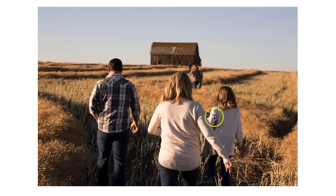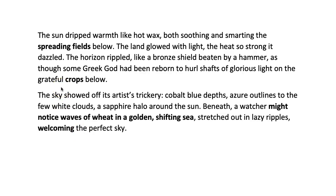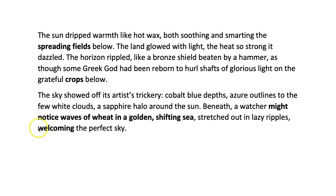So here we go. We've got a family walking through wheat fields towards a barn — not very inspiring — but our two paragraphs still work. The sun dripped warmth, smarting the spreading fields below. And then the glorious light is going to fall on the grateful crops below. Now we come to the second paragraph. Beneath, a watcher might notice waves of wheat in a golden shifting sea — I really like that because my sea in the original paragraph was a real sea, but here of course it's a metaphor. Stretched out in lazy ripples, welcoming the perfect sky. Because I've got the fields of wheat welcoming the sky, I've got some personification, and the easiest way to get all that was to adapt my existing paragraphs.